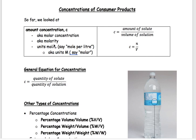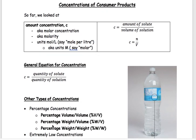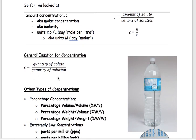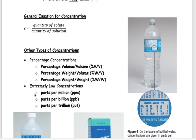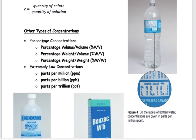Last day we looked at moles per liter. Today we're going to look at some other types of units. The general idea for concentration is how much of the solute — remember, that's the stuff you have less of — and you dump it into a solvent to make a solution. We're comparing it to how much of the total solution we have. The two types we'll look at today are percentage composition and parts per for very low concentrations.